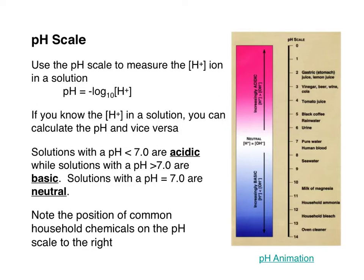You had some of those problems for homework. There is also a way to solve for H+ concentration if we know the pH, though that's a little beyond the scope of this class right now. If we can calculate the pH from the H+ concentration, we can determine whether a substance is acidic because the pH will be less than 7, or basic because the pH will be greater than 7. A solution at exactly pH 7 is neutral.